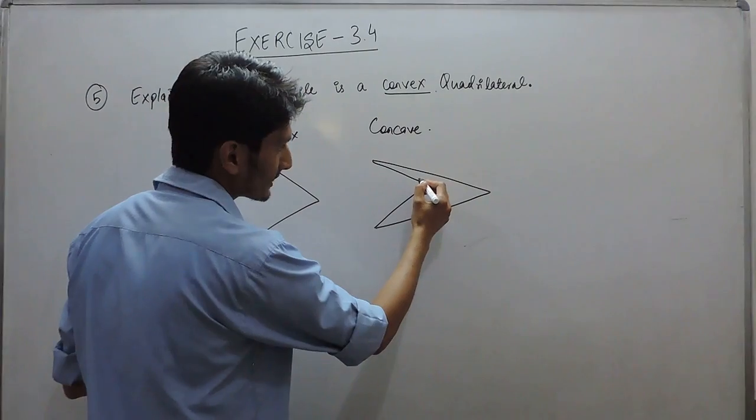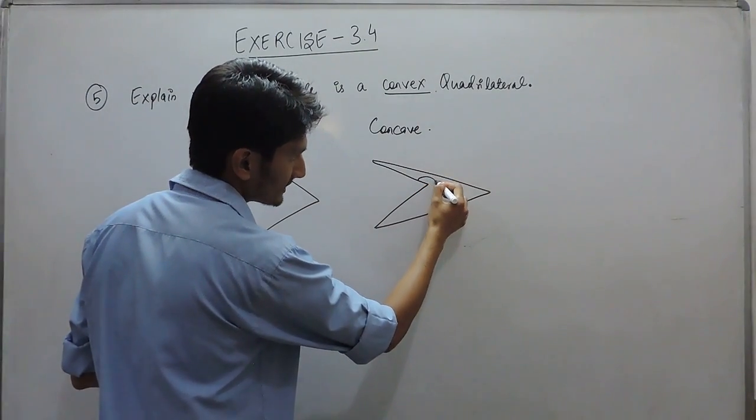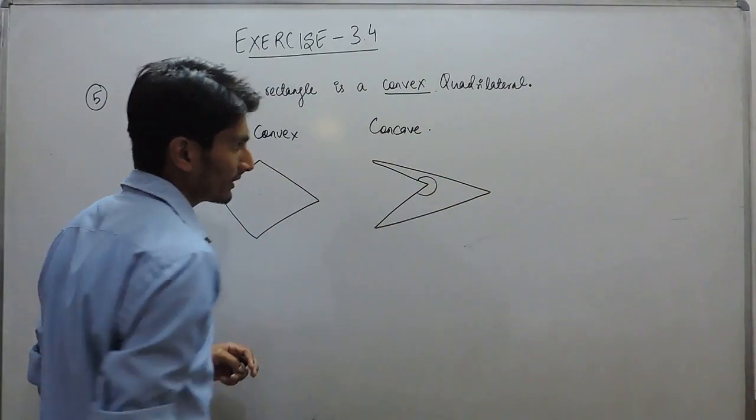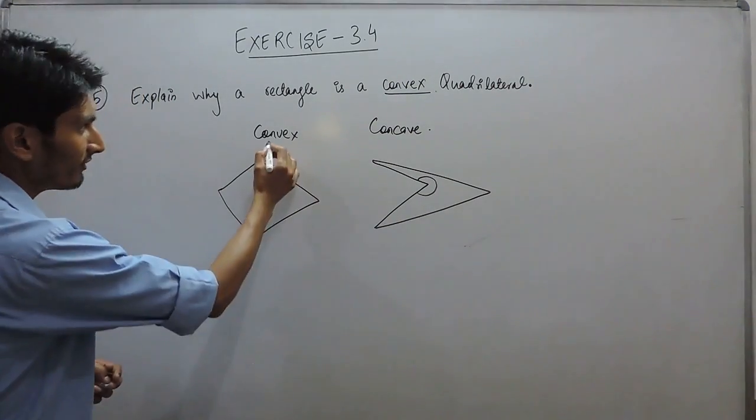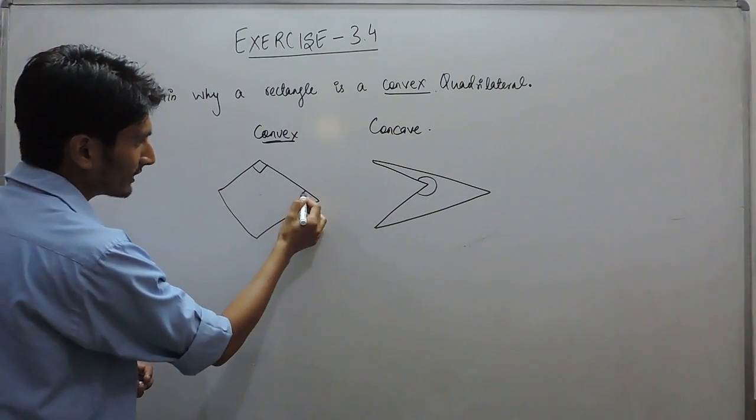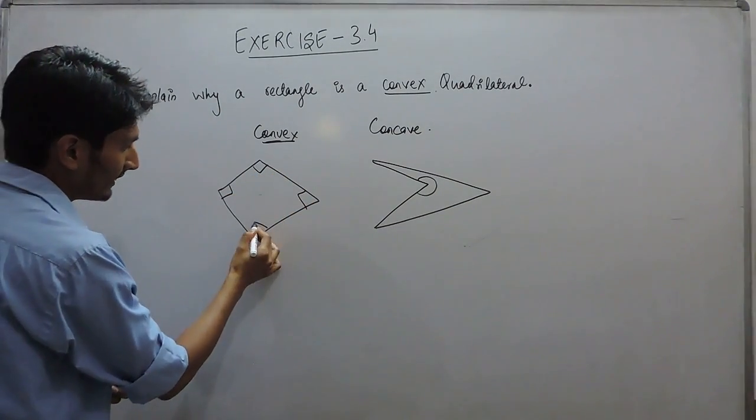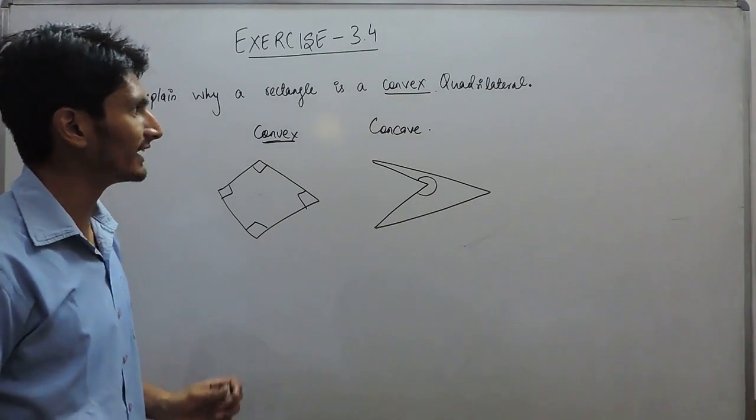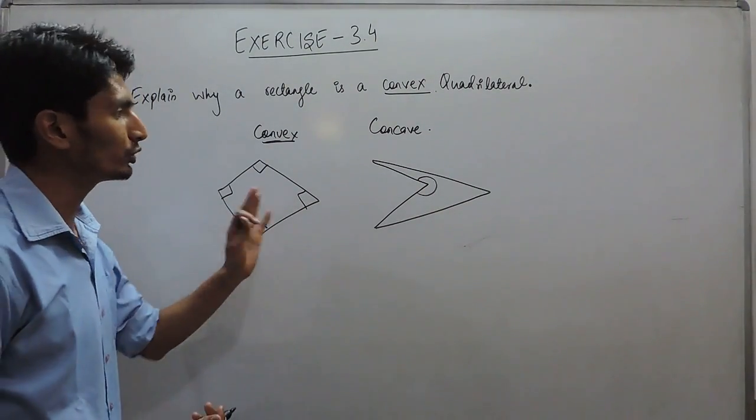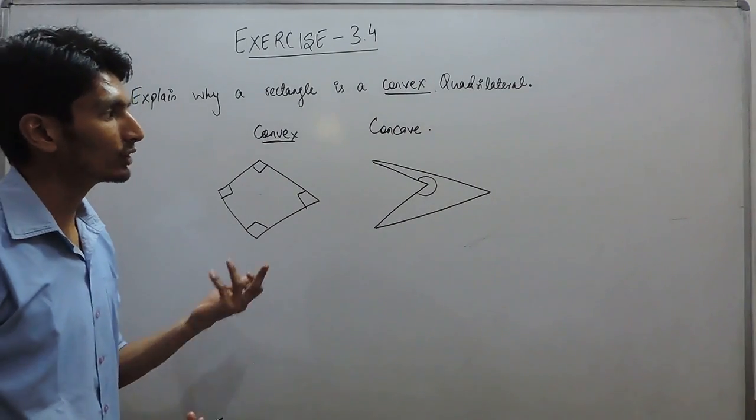A concave polygon has a property that one of its angles must be greater than 180 degrees. In a convex polygon, all its angles must be less than 180 degrees. So these are the two differences between convex and concave polygons.